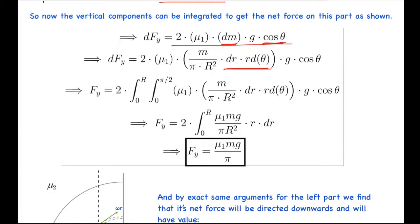And we integrate this over theta and r from theta equals to zero to pi by two and r equals to zero to r. So this can be integrated simply and integrating theta and r one by one we get that Fy equals to mu1 mg by pi. You can go through the calculations yourself.